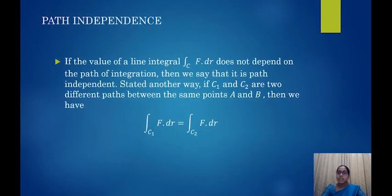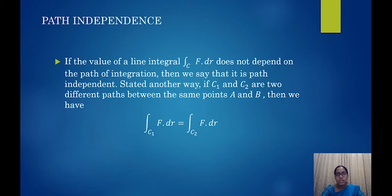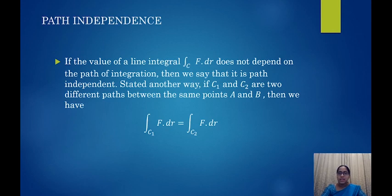As mentioned earlier, we can now see what is meant by path independence. If the value of the line integral does not depend on the path of integration, we say it is path independent. In mathematical terms, if C1 and C2 are different paths from point A to point B, and the integral over C1 of F·dr equals the integral over C2 of F·dr, then the function is path independent.